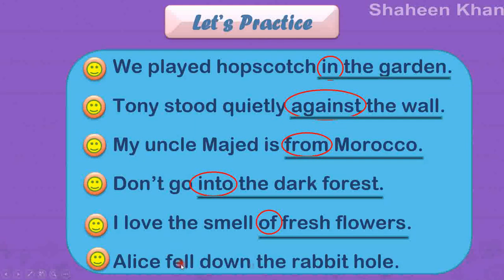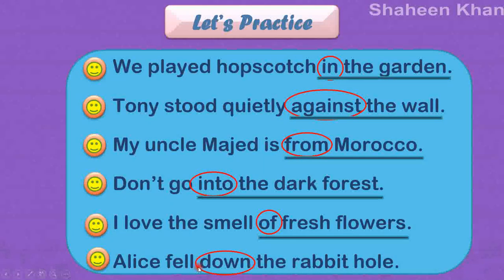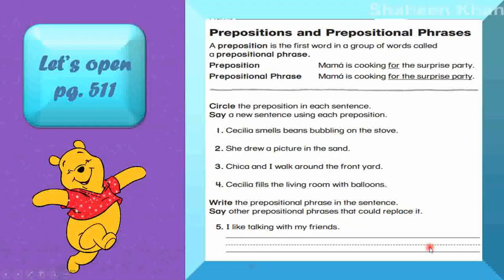Alice fell down the rabbit hole. Where did she fall? Down the rabbit hole. So the preposition is 'down,' and the prepositional phrase, starting from 'down' and stopping at the noun 'rabbit hole,' is 'down the rabbit hole.' Very well. Now let's see if you can apply this in your notebook — open page 511. We will start solving this. Are you ready with your pencils? Get set, come on!